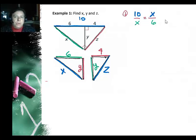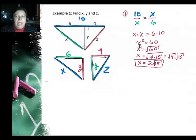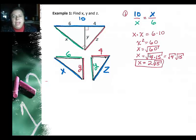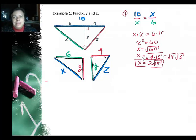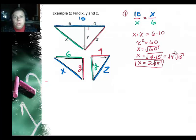Once you get this far it's pretty simple — you just cross multiply, giving X squared equals sixty. Since I want X and not X squared, I take the square root. You can simplify within the square root if you have any perfect squares. Perfect squares include one, four, nine, sixteen, and so on. Four goes into sixty, so I factor it out: the square root of four is two, giving X equals two times the square root of fifteen.